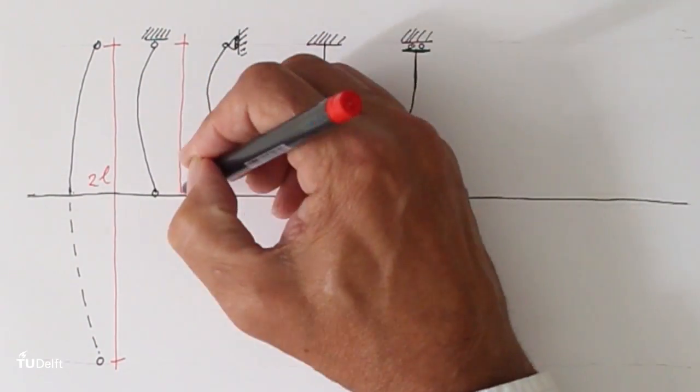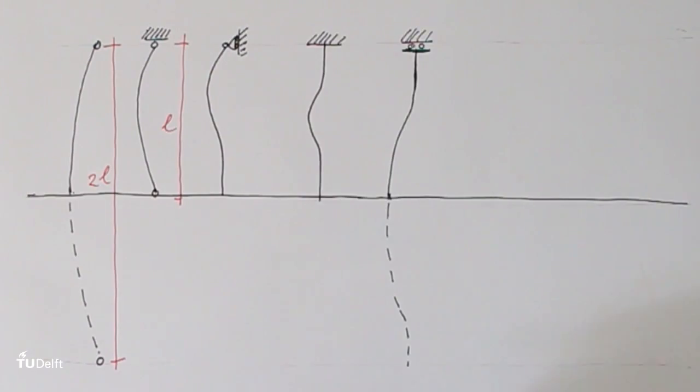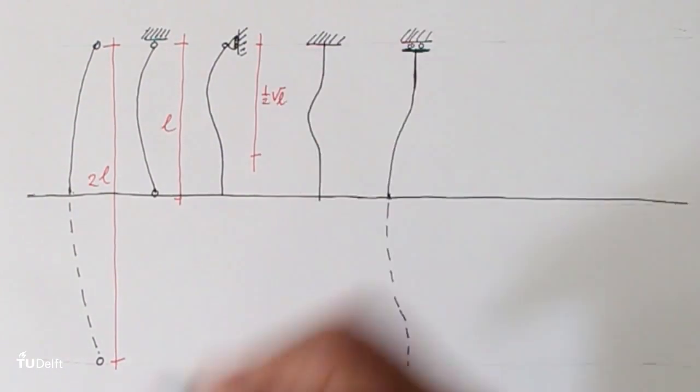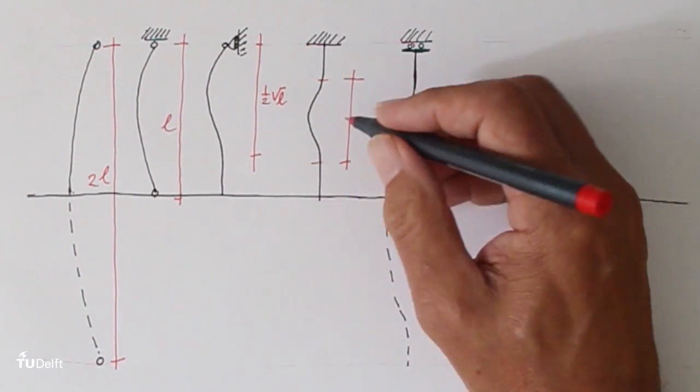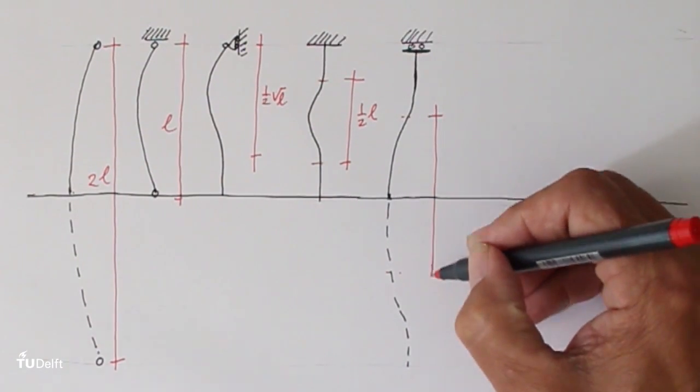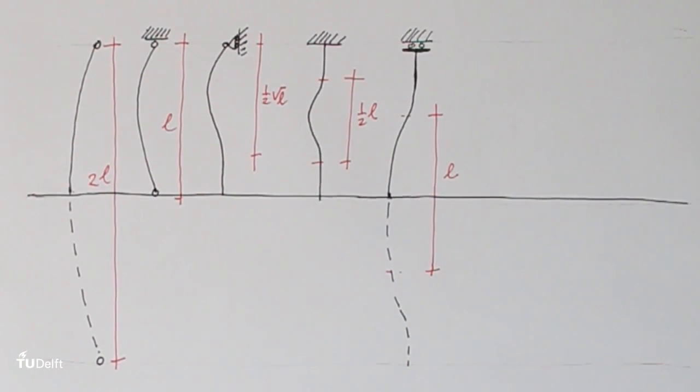A rigid connection reduces the buckling length. To withstand this effect of buckling, a lot of material is required, much more than is needed in tension.